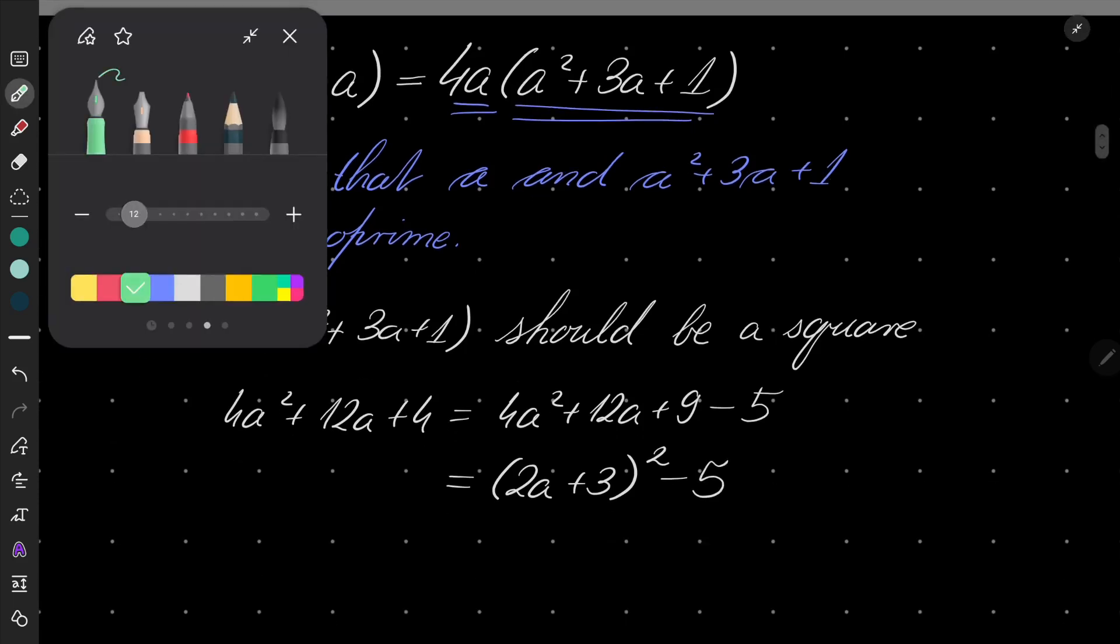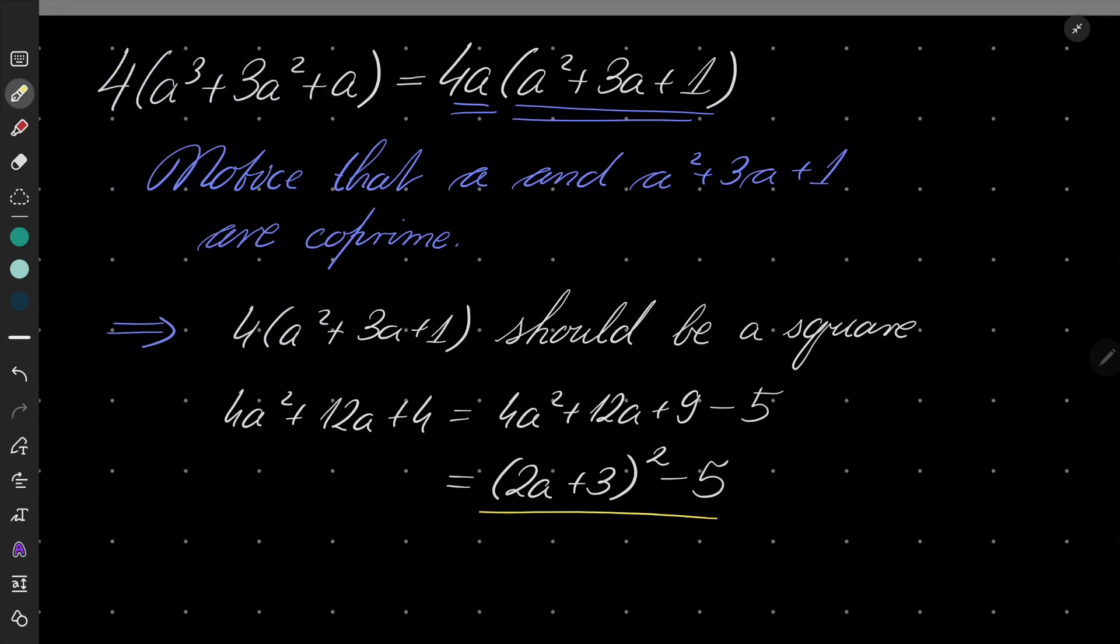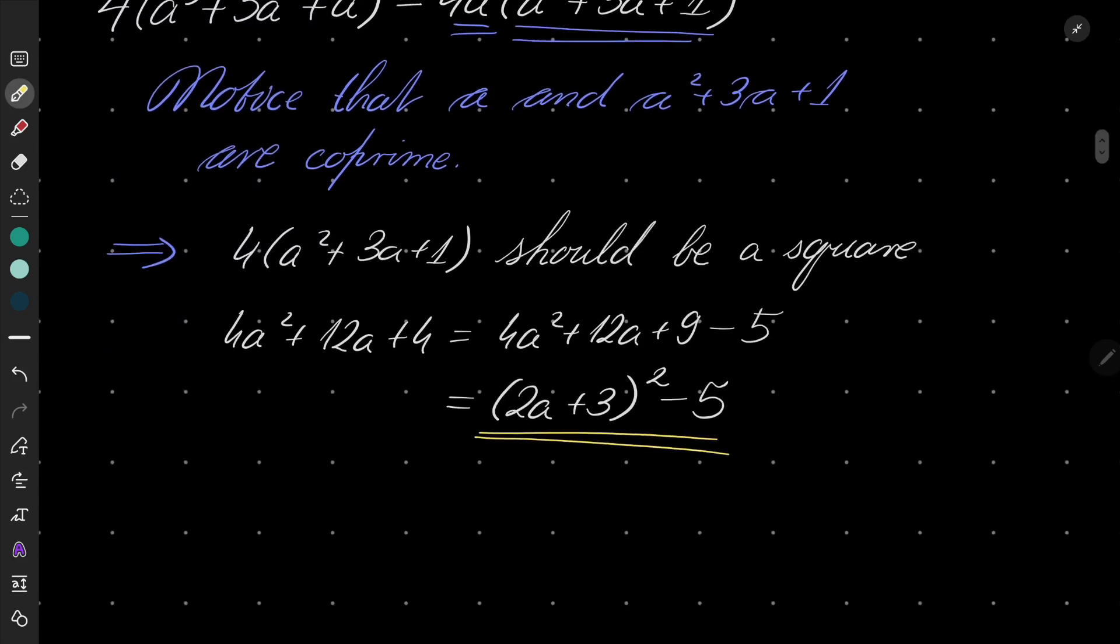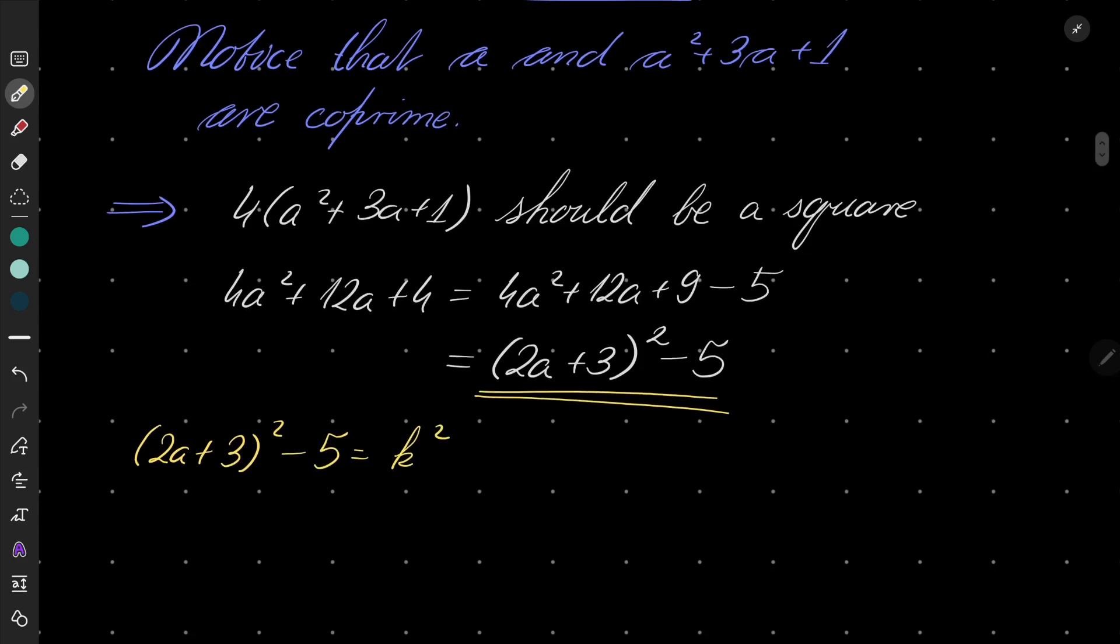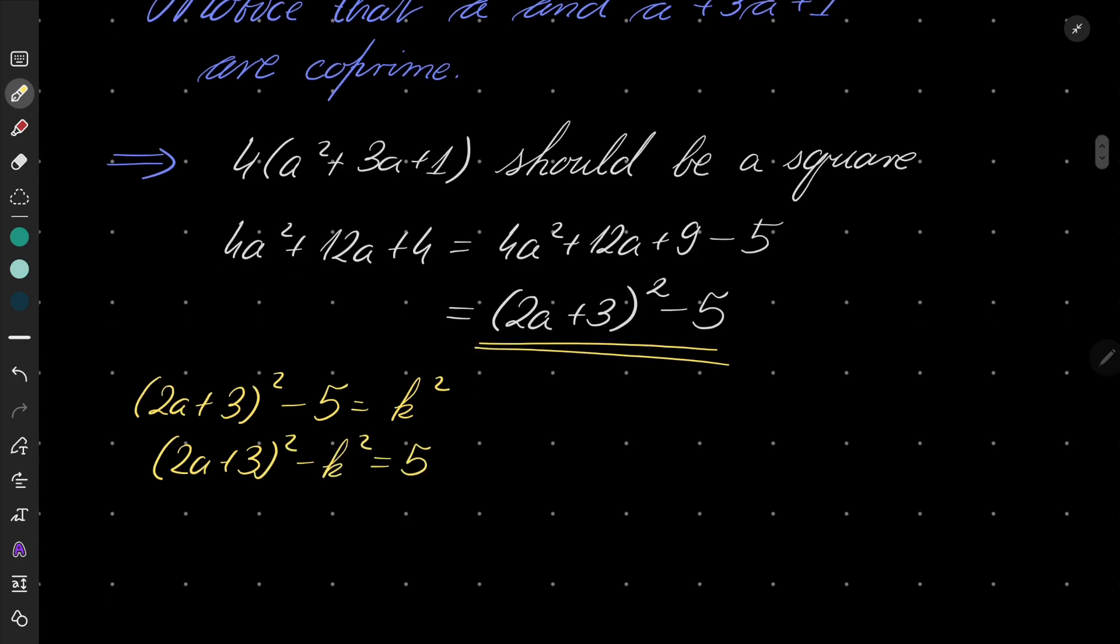So this number should be a square. Okay, but so let's write that (2a + 3)² - 5 = k². So we should have two squares which are 5 units apart on the real line.